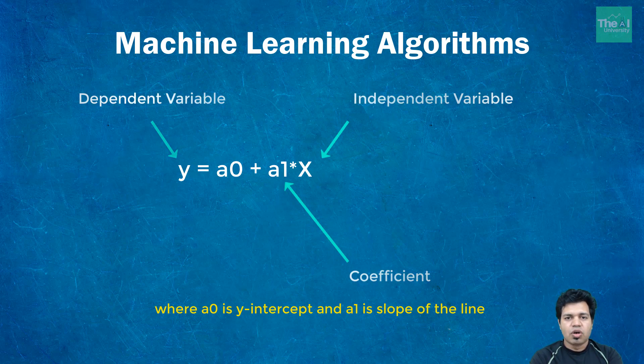a0 is a constant term here which is a point where best fit line crosses the vertical y-axis.